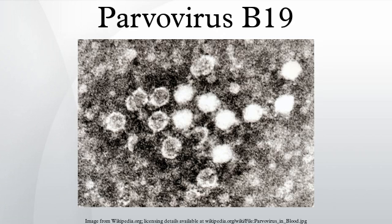Primate Erythroparvovirus 1, generally referred to as B19 virus, Parvovirus B19, or sometimes Erythrovirus B19, was the first known human virus in the family Parvoviridae, genus Erythroparvovirus. It measures only 23 to 26 nanometers in diameter. The name is derived from Latin, 'parvo' meaning small, reflecting the fact that B19 ranks among the smallest DNA viruses.